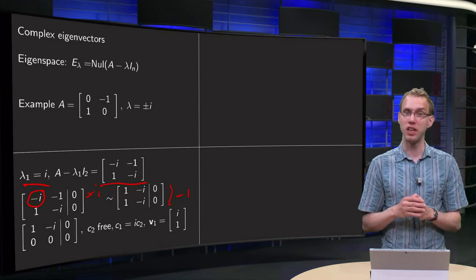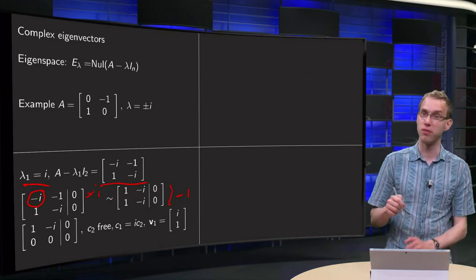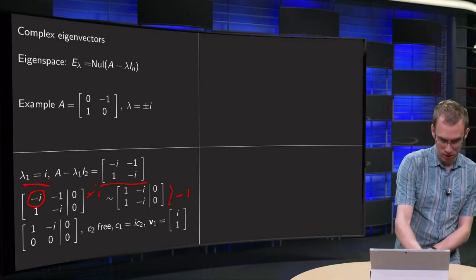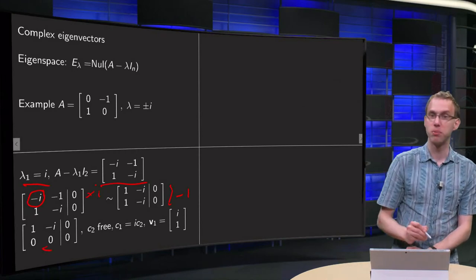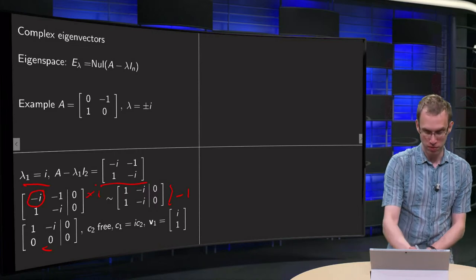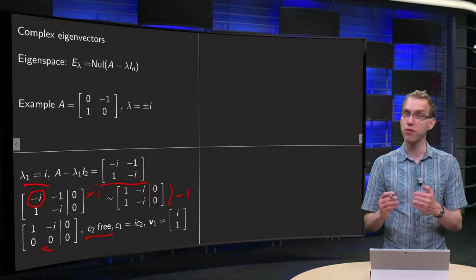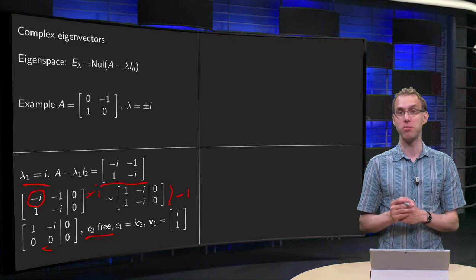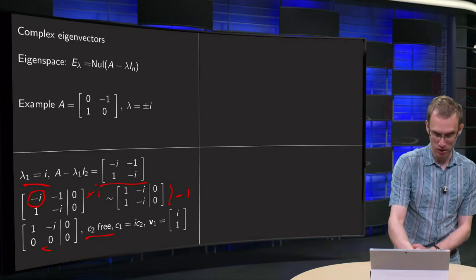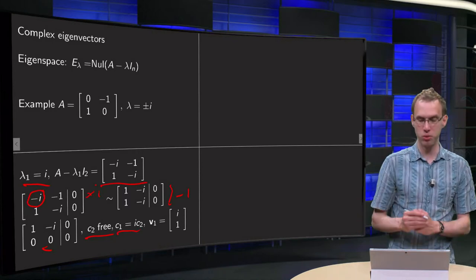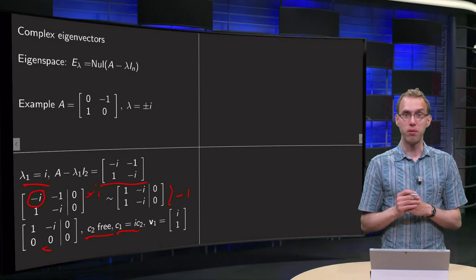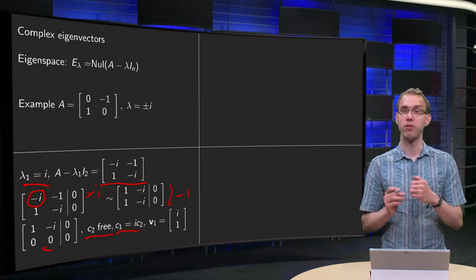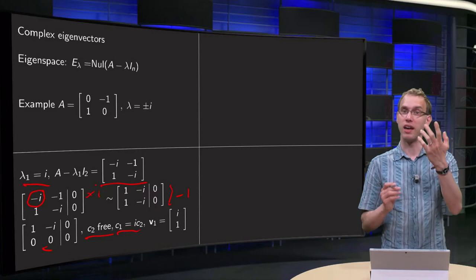Now we can solve. We can take c2, the free variable, to be free, and then the first line tells us c1 minus i times c2 equals 0, or c1 equals i times c2. So we can choose 1 for our free variable, and then we have our first eigenvector v1 = [i, 1].